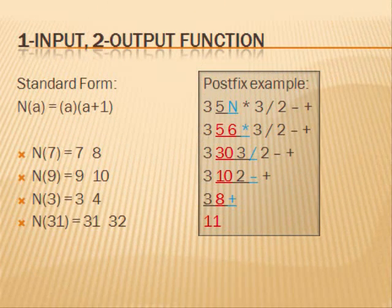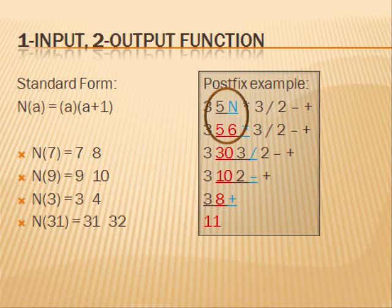Here, I define a one-input, two-output function named n. The first output of n of a is a. The second output of n of a is a plus 1. Therefore, the first output of n of 7 is 7, and the second output of n of 7 is 7 plus 1, which is 8. n of 9 is 9, 10. n of 3 is 3, 4. n of 31 is 31, 32.